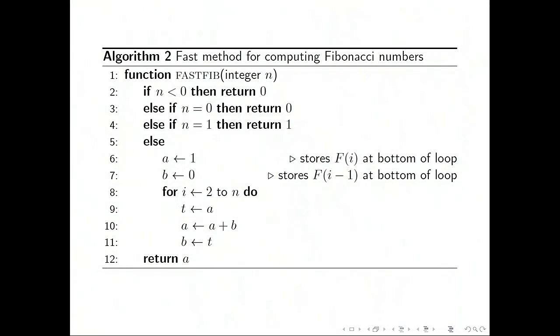Now looking again at the pseudocode for the algorithm, we see that inside that loop, we're going around n minus 1 times. And each time we're doing three assignment statements and an addition, doing some fixed amount of work. And before we get into that loop, we're just doing some fixed amount of work that doesn't depend on n. So actually, we are doing about some constant times n plus some other constant amount of work. And we call that a linear time algorithm. The other algorithm, the slow algorithm, is very much worse than that.